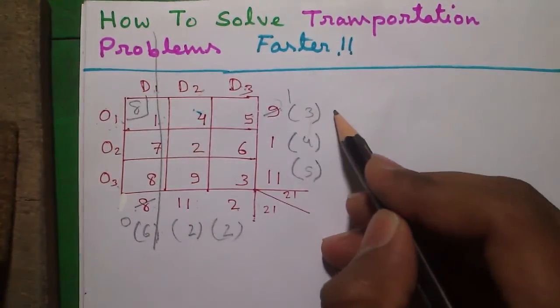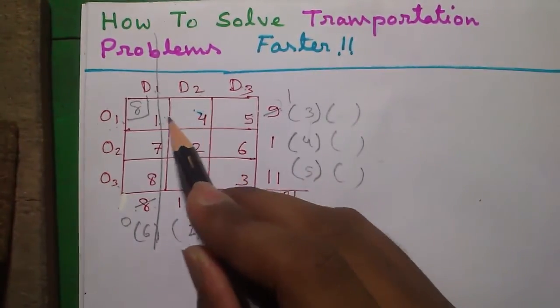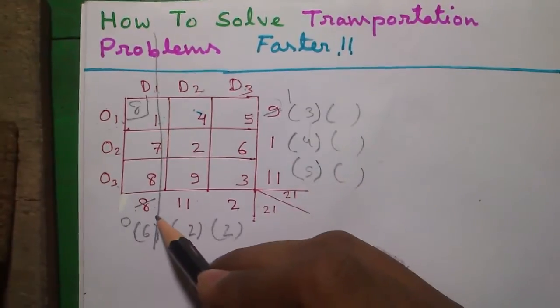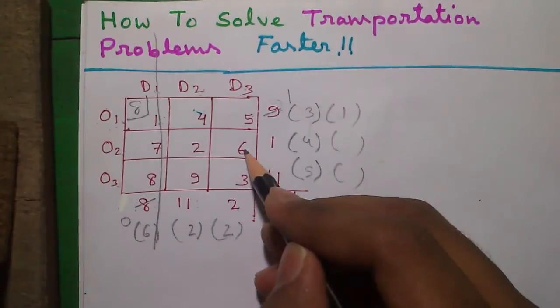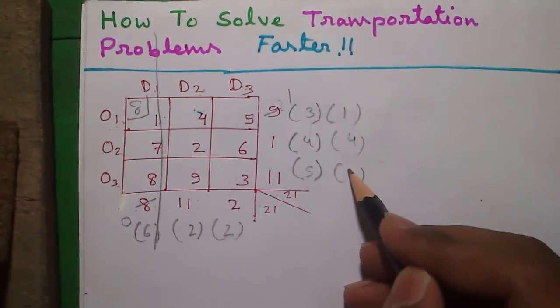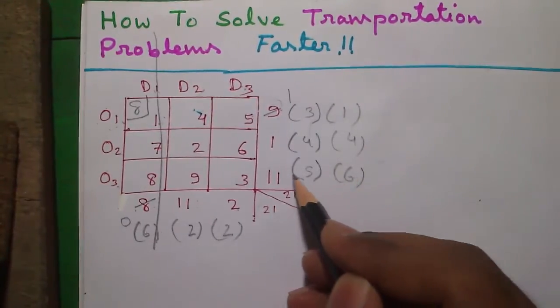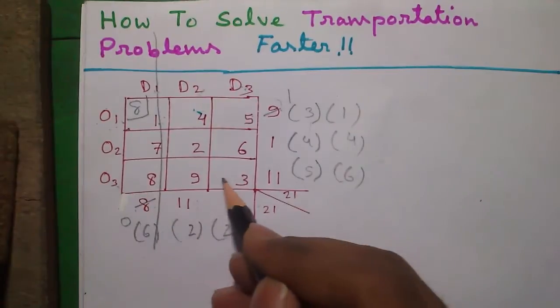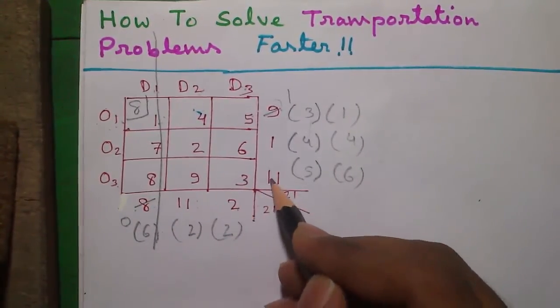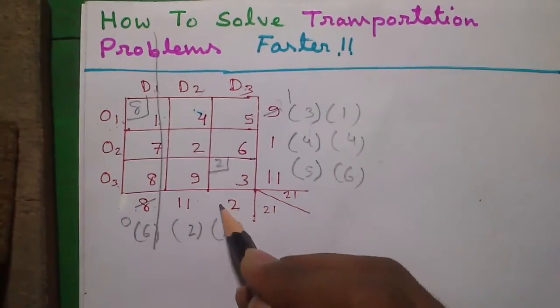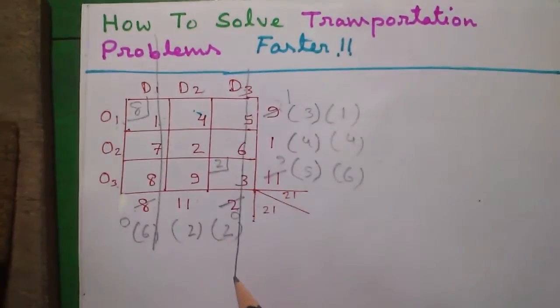Next we'll do the same process. Smallest number is 4 because this column is exhausted. So 4 subtracted from 5 is 1, 6 minus 2 is 4, and 9 minus 3 is 6. So again the largest number is 6 and for this 6, for row 3 our smallest number is 3. So for this 3, demand is 2, supply is 11. Take the minimum value and allocate. So it will become 0, it will become 9. So it's 0, let's strike through it.